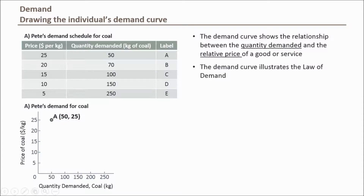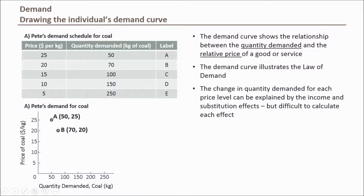Point B represents a lower price level, and according to the law of demand, a lower price leads to higher quantity demanded. At point B, the price drops to $20 per kilogram and Pete will now buy 70 kilograms — 20 more than at point A. Recalling the income and substitution effects: when coal's price dropped from $25 to $20, other goods appeared more expensive and Pete had more income left to spend on coal. Both effects together help explain this increase in quantity demanded.